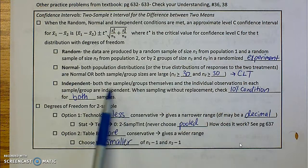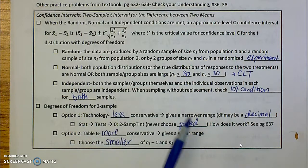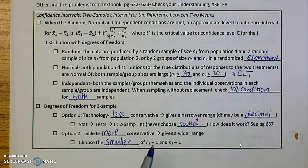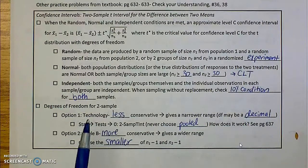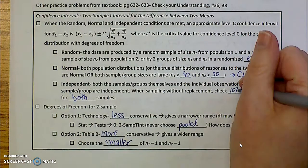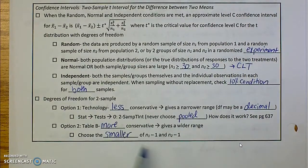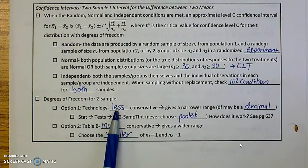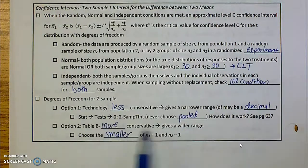Independent: you have to talk about how the samples as well as the groups and also the individuals were all independent. And then if you're sampling without replacement, you check the 10% condition for both samples. So that's just going to be for sampling. You're not going to need that for experiments, I don't think. So this is what we had from the slide. Less conservative for my technology option. And then we have more conservative for our table option.